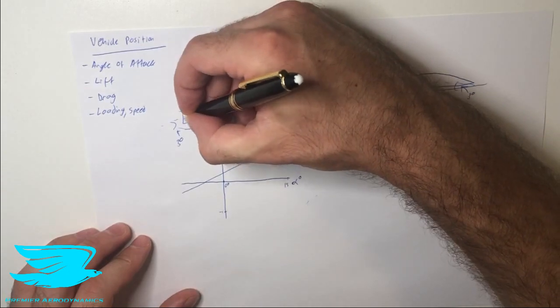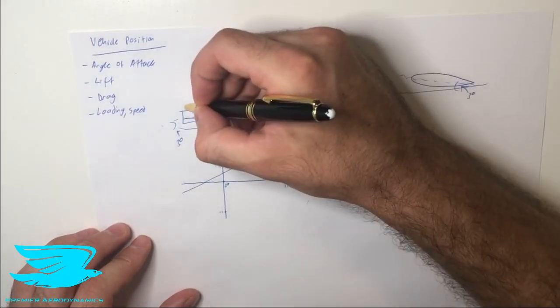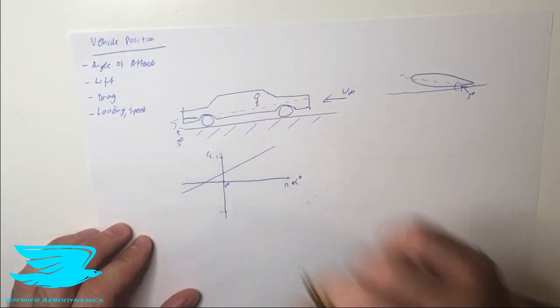And if we pitch the car nose down, we can start to approach zero and maybe even cross into negative lift if we're lucky. Or we can always work on the diffuser as we've done with different videos and the rear spoiler, front spoiler, etc.